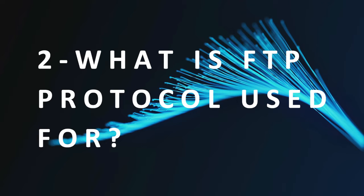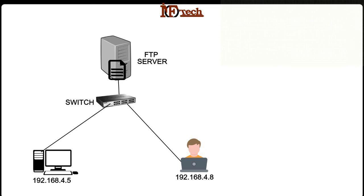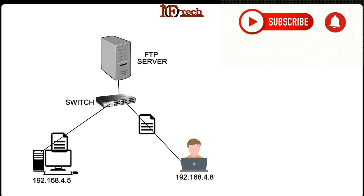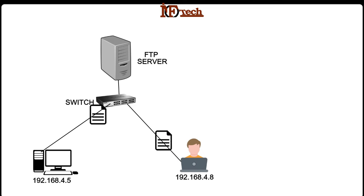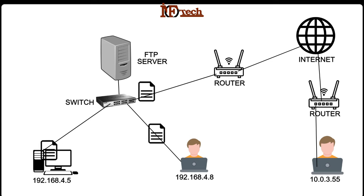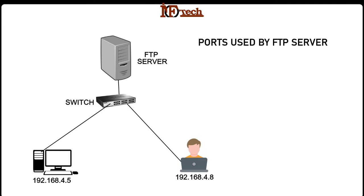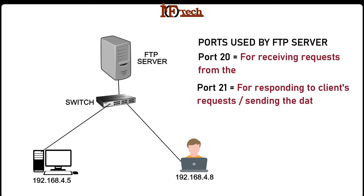FTP protocol helps in transferring and receiving data or files over TCP/IP networks. In simple words, FTP protocol is used for uploading and downloading data or files from FTP systems, whether within the same local network or over the internet between different networks. FTP server uses two ports: port 20 for receiving requests from the client, and port 21 to respond to the client's request and send data to clients.